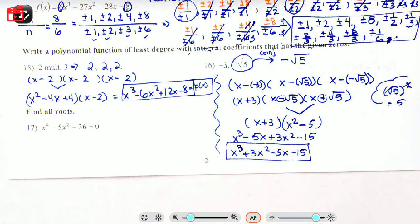Alright, so we are on the last one: find all roots. Immediately I see that I have a 4 as my exponent, so I know that I'm going to be maybe using substitution.